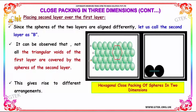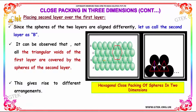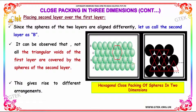Since the spheres of the two layers are aligned differently, we call the second layer B. It can be observed that not all the triangular voids of the first layer are covered by the spheres of the second layer, and this gives rise to different arrangements.